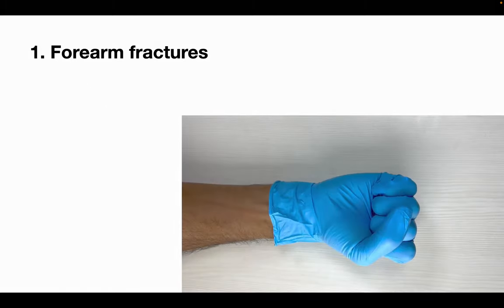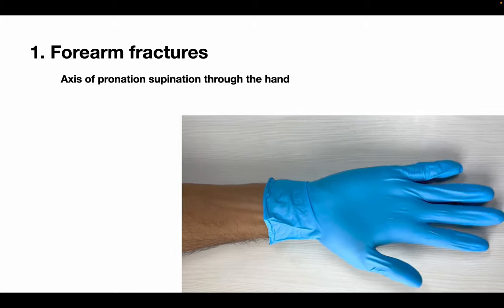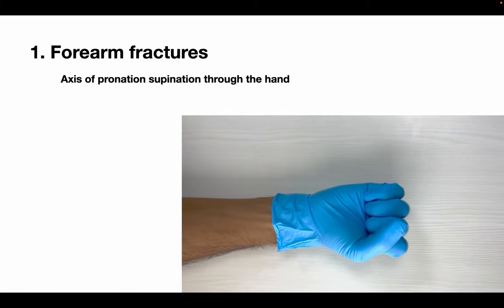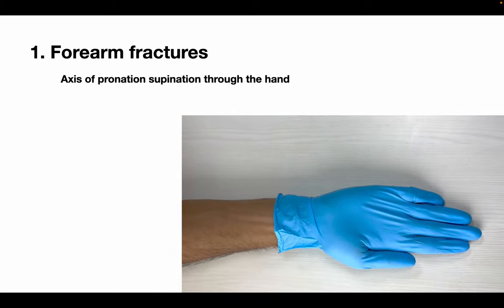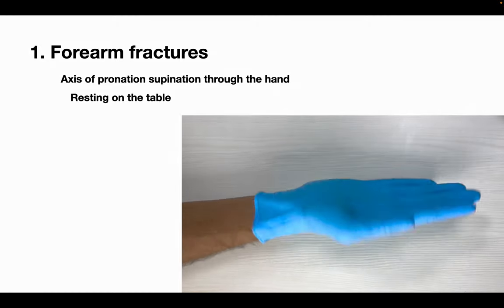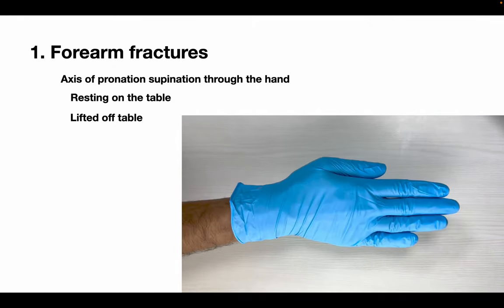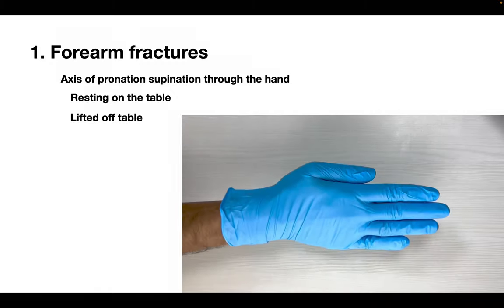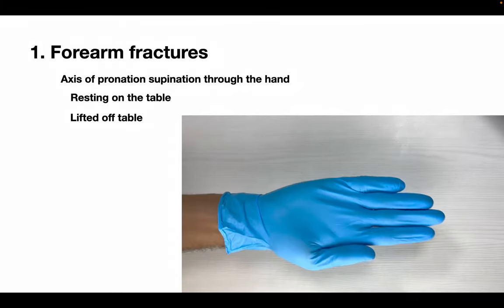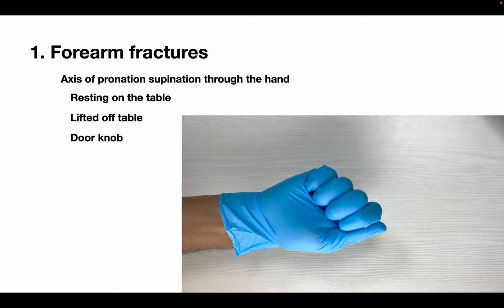The hand can be positioned to allow the pronation and supination axis to pass through any of the fingers. When the hand is resting on the table, the pronation-supination axis passes through the little finger. When the forearm is off the table, it passes through the middle finger. In activities such as turning a door key, the axis shifts towards the thumb.